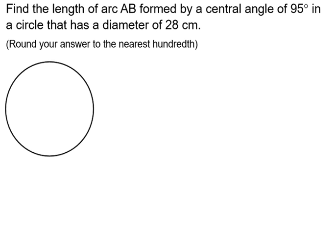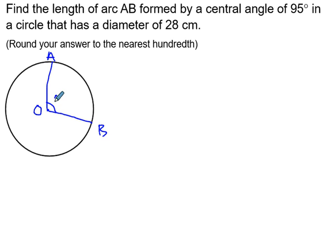Find the length of an arc AB formed by a central angle of 95 degrees in a circle that has a diameter of 28 centimeters. The first thing we should always do is draw a picture. I have my center, I'm going to call it O, and I have an arc AB formed by a central angle of 95 degrees. I have AOB and the central angle is 95 degrees.